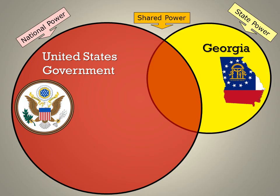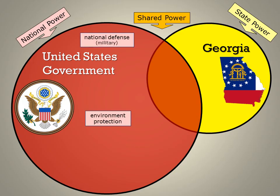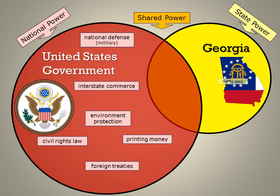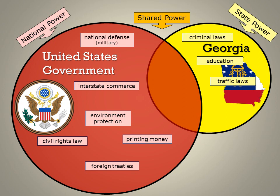Some of the powers held by the national government of the United States include national defense, the authority to protect the environment, the authority to regulate interstate commerce, to negotiate foreign treaties, to enforce civil rights laws, and to print money. Some of the powers held by state governments like Georgia include the power to make traffic laws, the authority to regulate education — schools are funded and regulated at the state level in the U.S. — the authority to make and enforce criminal laws, and the authority to issue driver's licenses.